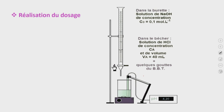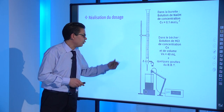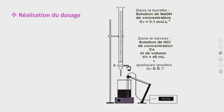On passe à la réalisation du dosage. On va verser progressivement la solution de NaOH. Le mélange au départ est jaune. Puis, après un certain volume de base ajouté, qu'on va appeler VBE, le mélange devient vert et le pH devient égal à 7. On parle ici de l'équivalence acido-basique. Une goutte supplémentaire de base rend le milieu bleu et on a un pH supérieur à 7.